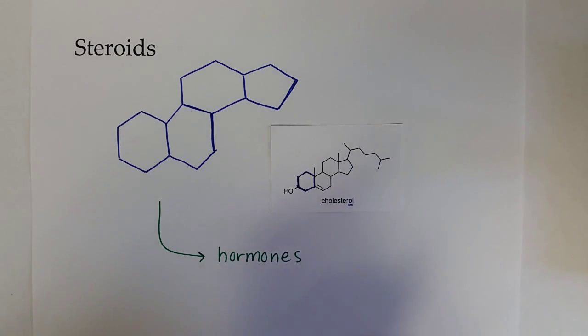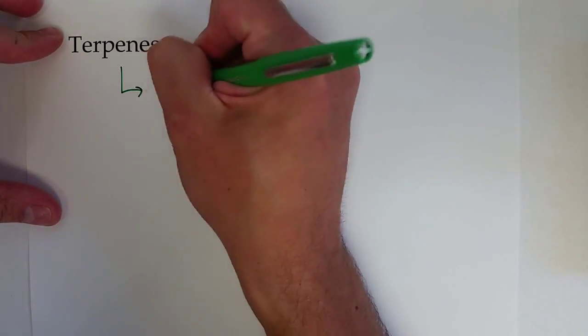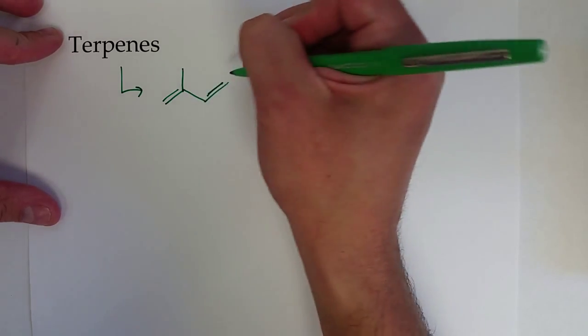The last class of lipid molecules we'll talk about are terpenes. The biological terpenes start with an isoprene molecule which looks like this - it's just an alkene, two double bonds that essentially link up to pyrophosphate groups.